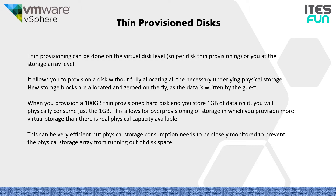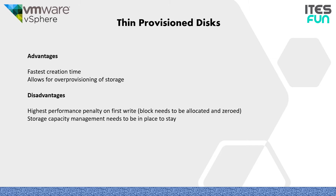This allows for over-provisioning of storage, where you can provision more virtual storage than there is real physical capacity available. This can be very efficient, but physical storage consumption needs to be closely monitored to prevent the physical storage array from running out of disk space. The advantages of thin provisioning are fastest creation time compared to thick provision disks and it allows for over-provisioning of storage — for example, with 1 TB of total storage, you can create VMs for 2 TB, but total consumption is limited to 1 TB. The disadvantages include the highest performance penalty on first write, where the block needs to be allocated and zeroed, and storage capacity management needs to be in place.